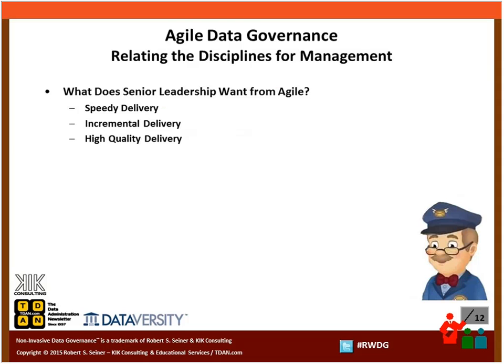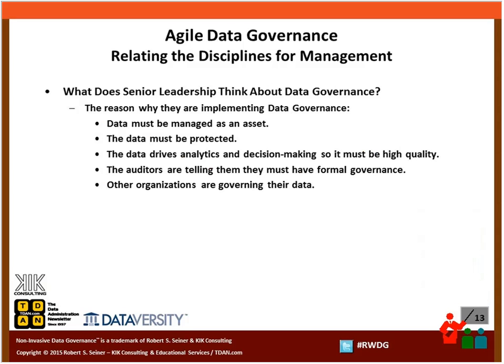Let's look at that from an agile perspective. What is senior leadership looking for when we talk about delivering things in an agile way? They're looking for basically three primary things: speedy delivery, incremental delivery, and high quality delivery. I don't know how many of you know who that person is on the bottom right of the screen — Mr. McFeely — known for saying speedy delivery, and that's certainly what organizations are looking for when they put agile projects into motion.